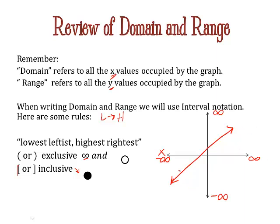My domain, all the x values occupied by the graph—if I take this line and flatten it down to the x-axis, where is it going to be covering? It's going to cover the x-axis with no stopping point, going on forever.